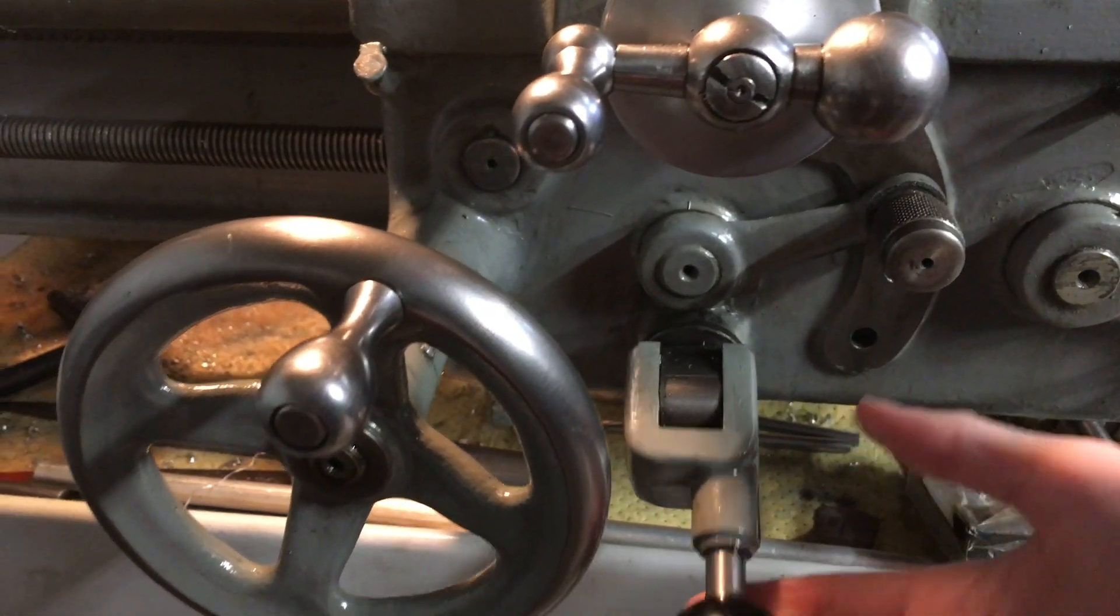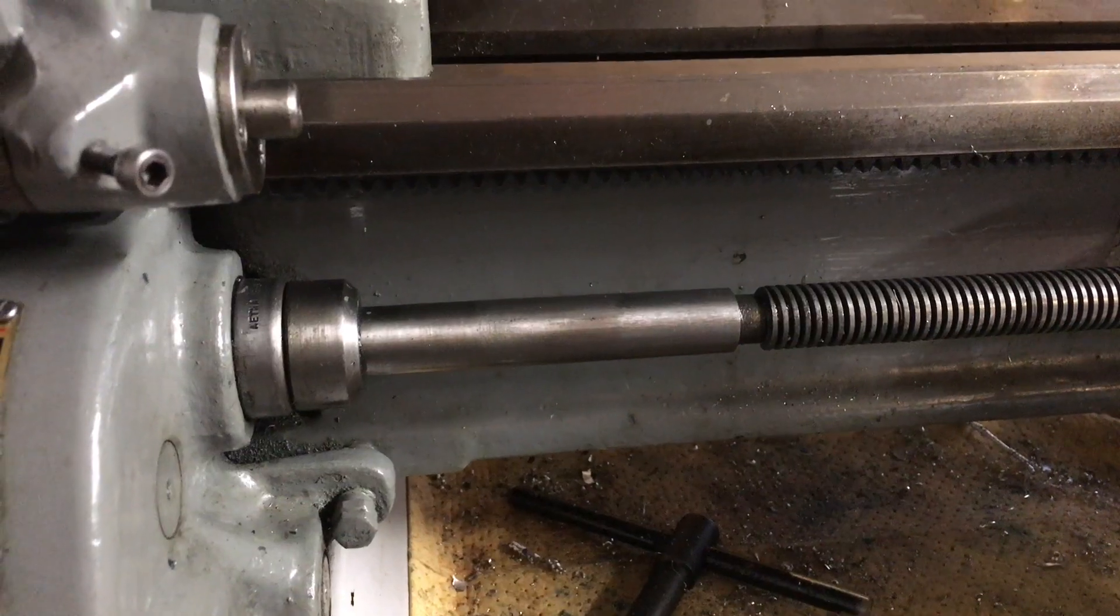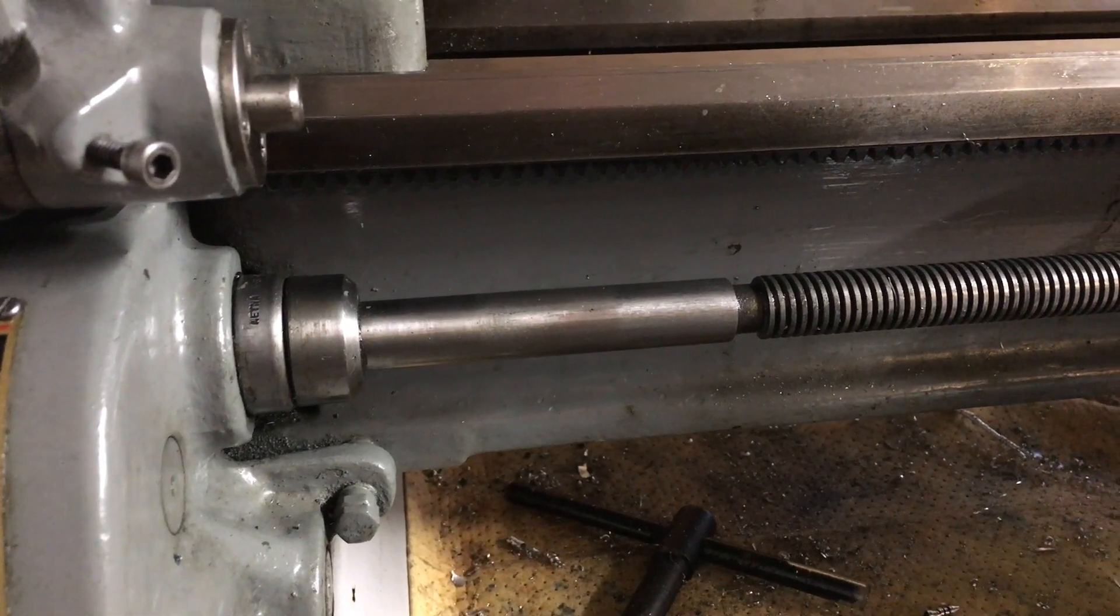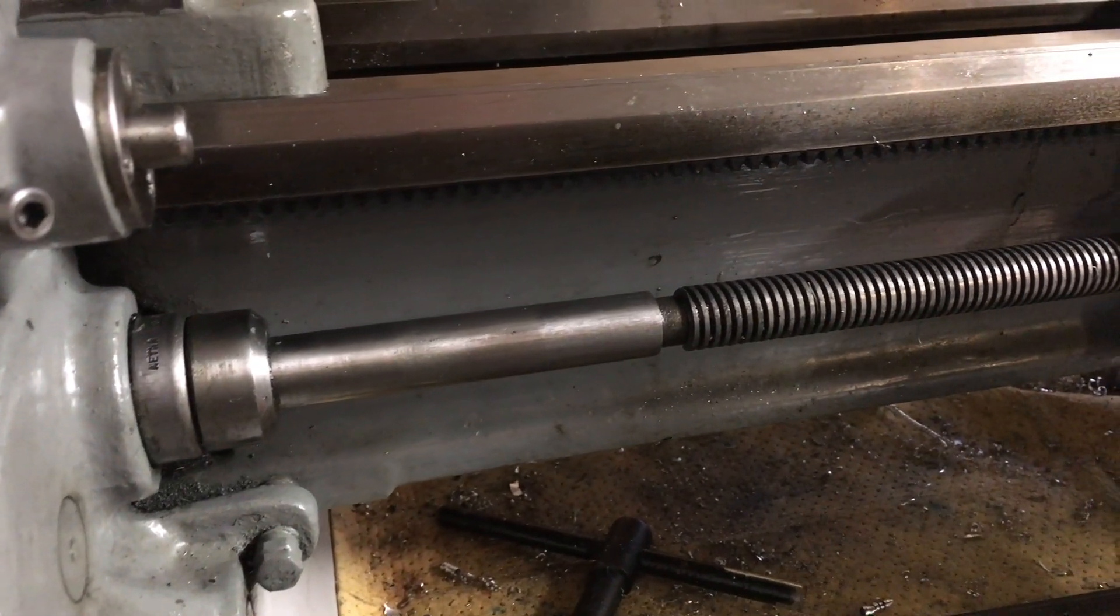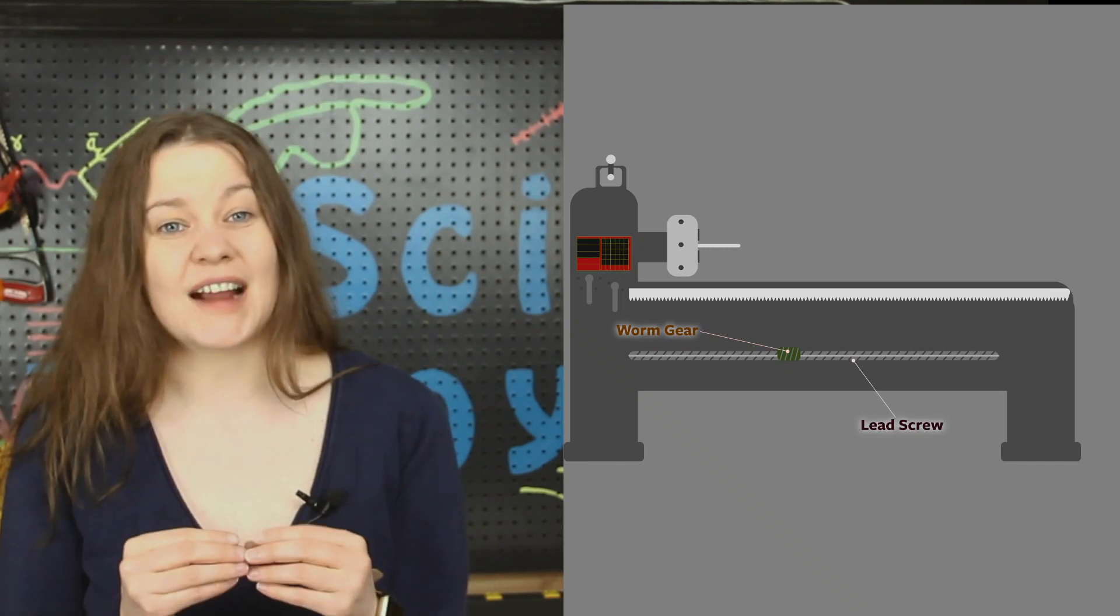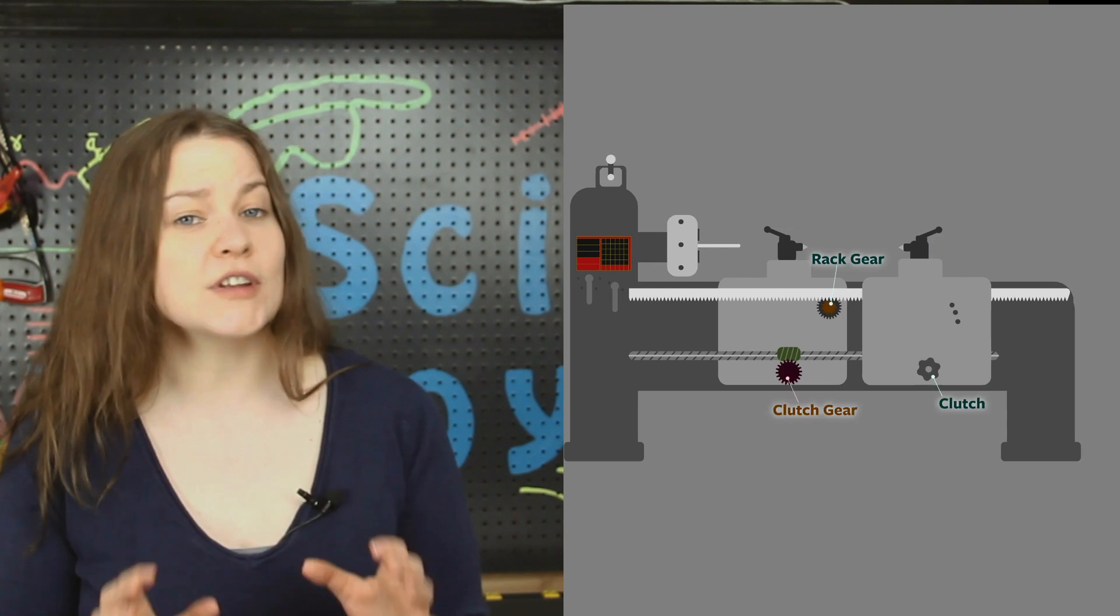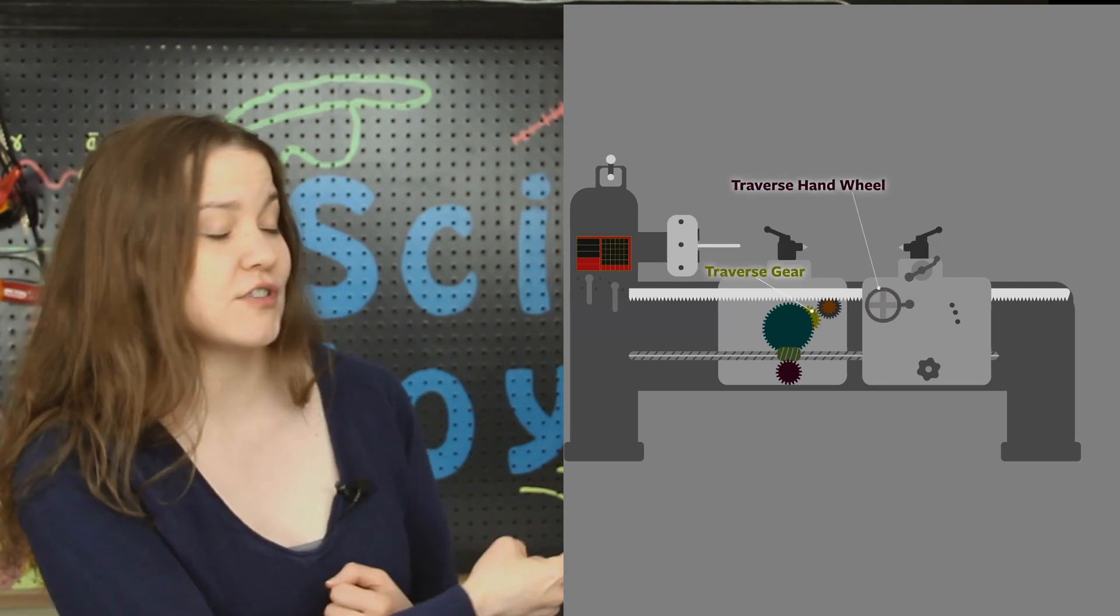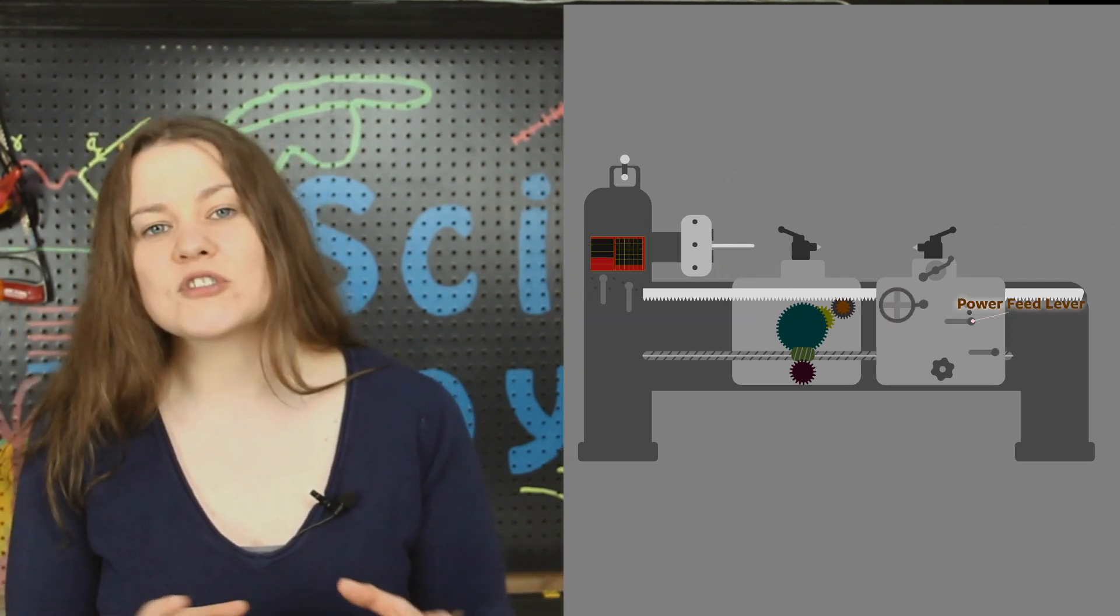And we can engage the power feed of the lathe with a clutch. And this clutch is going to interact with a worm gear that is keyed so it rotates along with the lead screw. And the lead screw is driven by motor's back of the headstock. The worm gear and the lead screw are locked together and always rotating. And the power from them is only transferred when the clutch is engaged. And this clutch can transfer power either in the cross-feed direction or in the traverse direction, depending on which gears the clutch is engaged with.